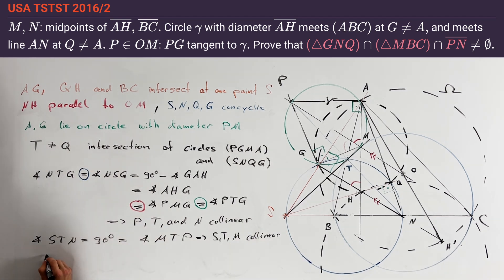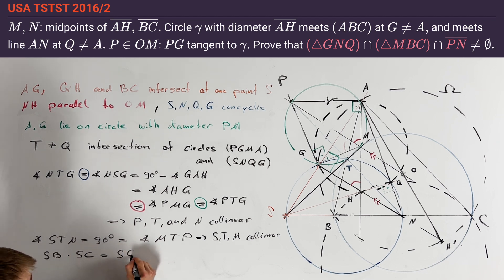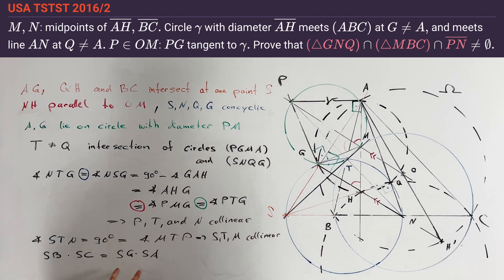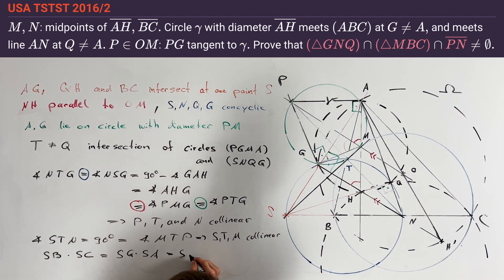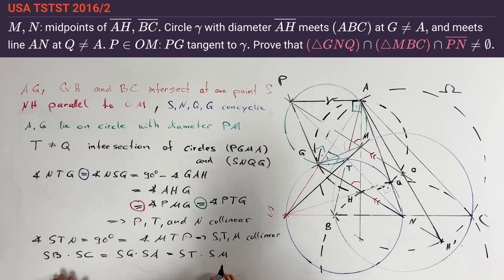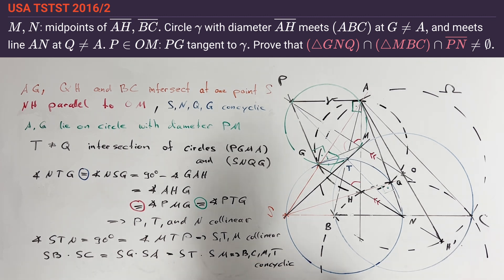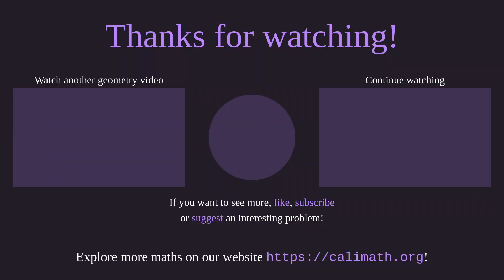This enables us to use power of a point at S. Considering oriented lengths: SB times SC equals SG times SA by power of a point on omega, and SG times SA equals ST times SM by power of a point on the green circle. By power of a point again, this immediately implies that B, C, M, and T are concyclic. Hence, point T also lies on the circumcircle of BCM, and we are done. Thank you.